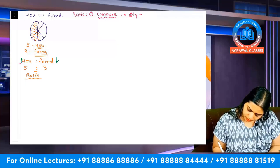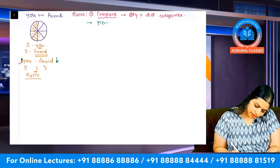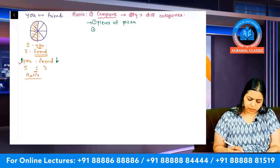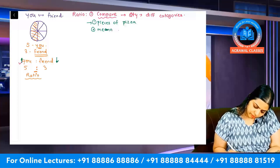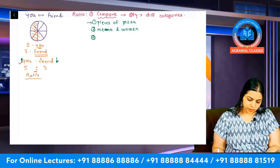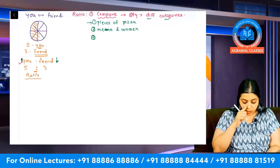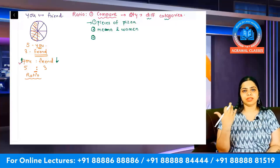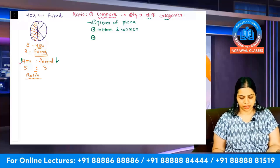Ratio helps you compare quantities of different categories. In this case it was pieces of pizza. In some cases it could be total number of human beings — number of men and number of women. Or it can be number of hot days and cold days, or salary of A versus salary of B. Once you see the ratio, you understand on a comparative basis whose share is more and whose share is less.